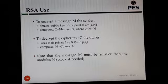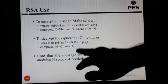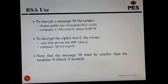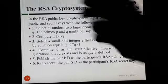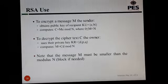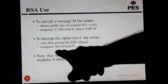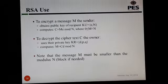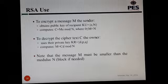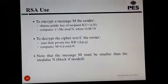For decryption, once the ciphertext reaches the receiver, the owner uses their private key (d, p, q). We have calculated d as the multiplicative inverse of e modulo n, and p and q are the two large prime numbers chosen. To recover the message, compute m = c^d mod n. Note that the message must be smaller than the modulus n.